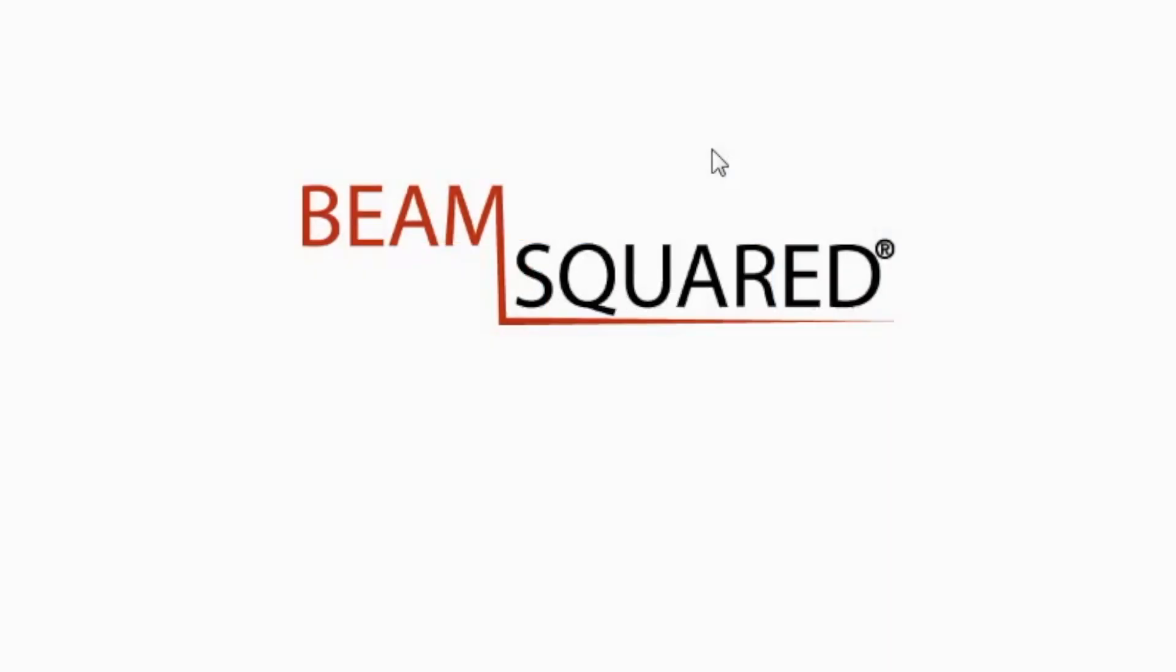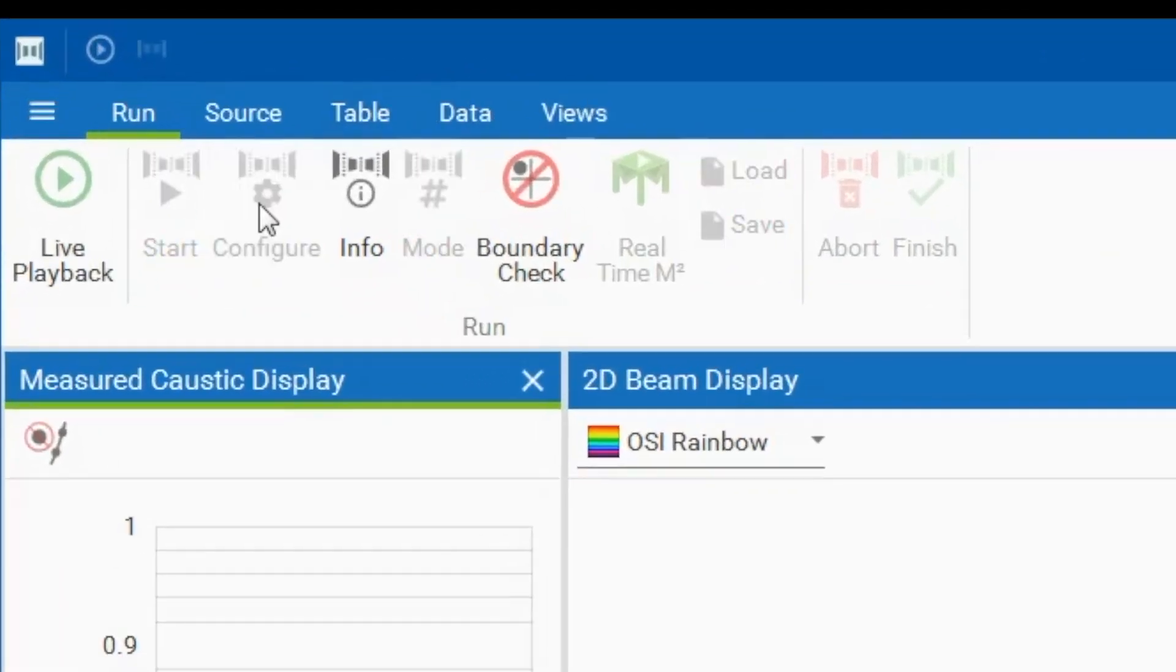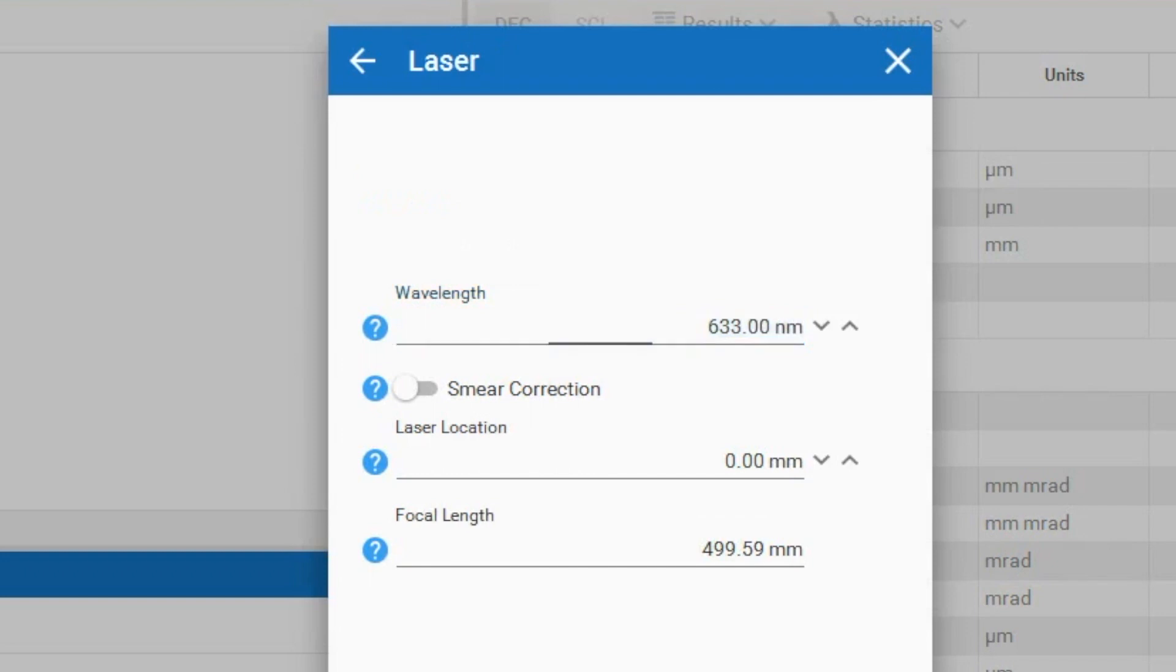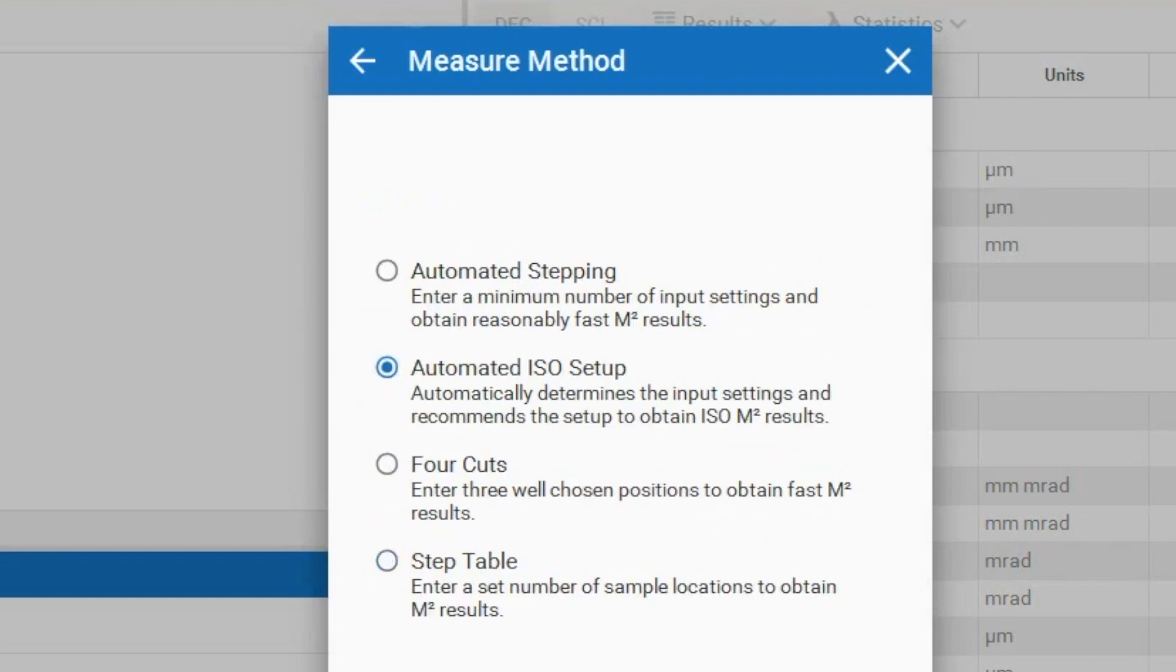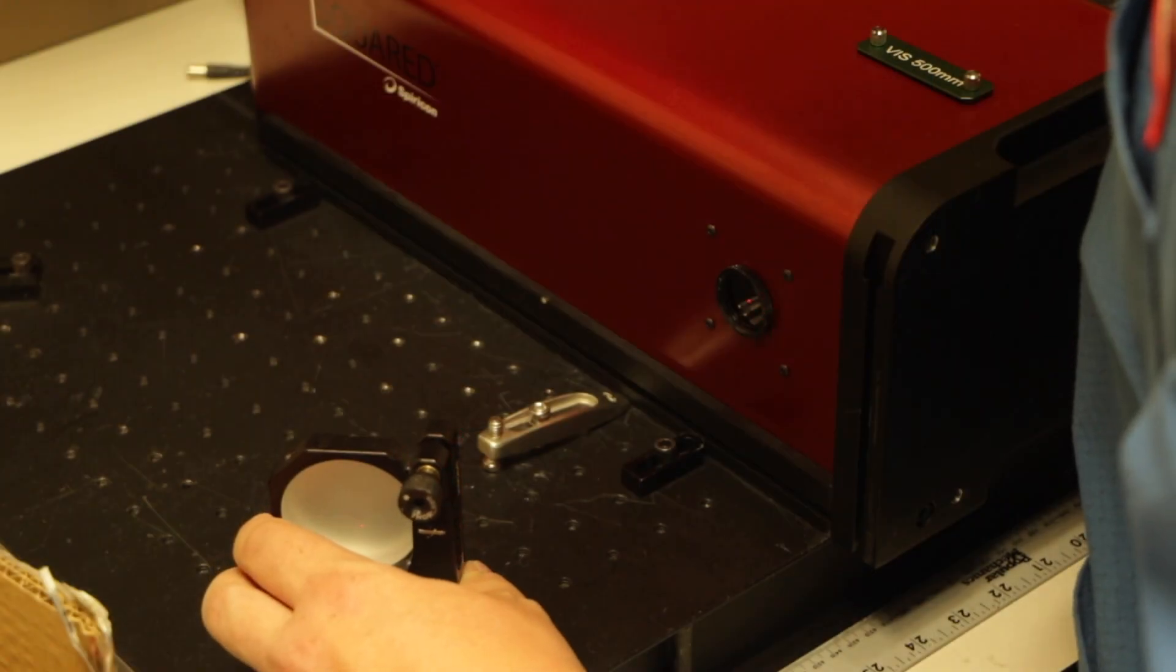Beam Squared now includes a new automated ISO setup feature that initially scans the beam under test and provides a suggested measurement step table that meets the minimum ISO requirement. This makes quickly obtaining an optimized ISO compliant laser beam propagation measurement as easy as align and click.